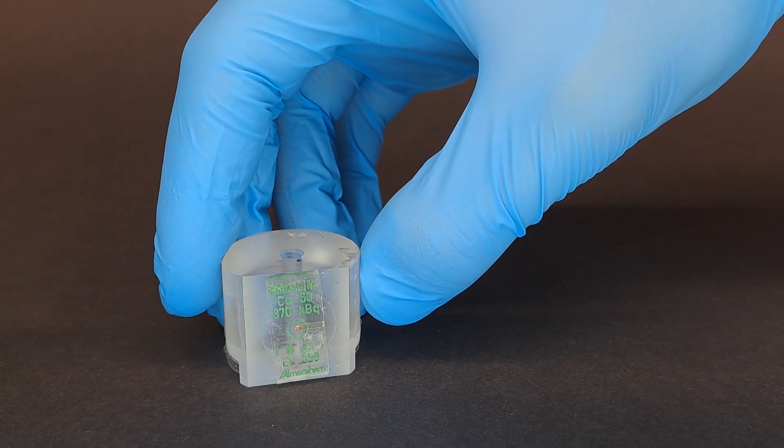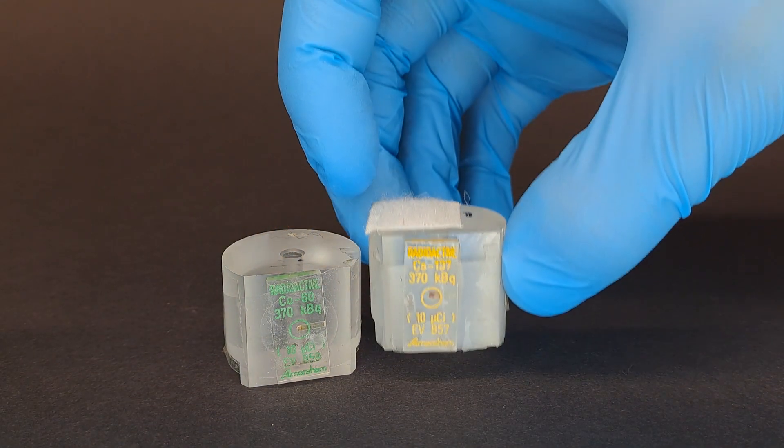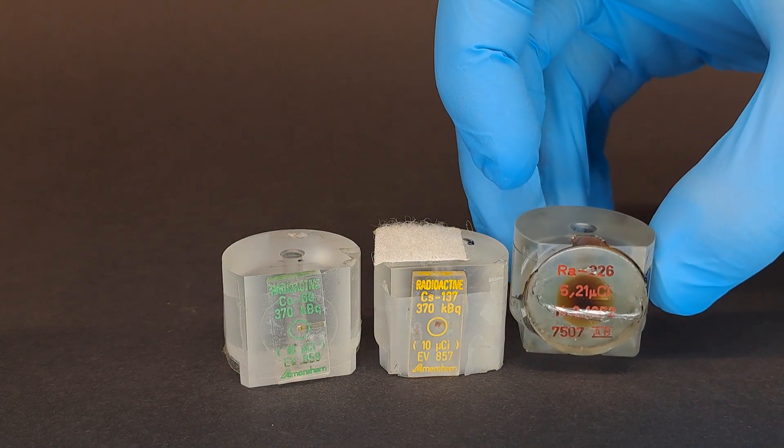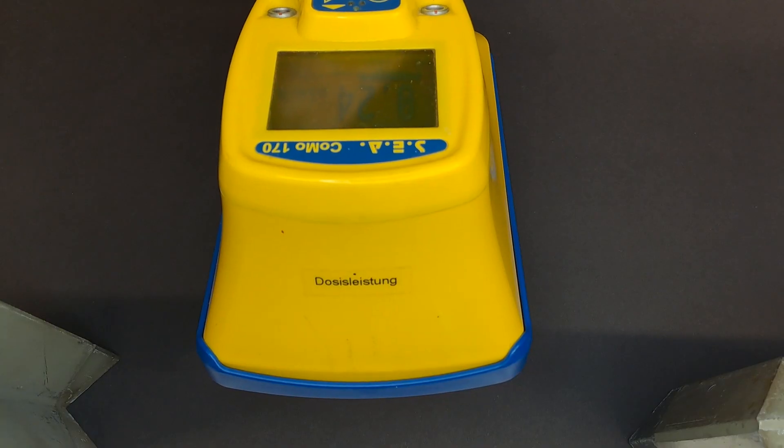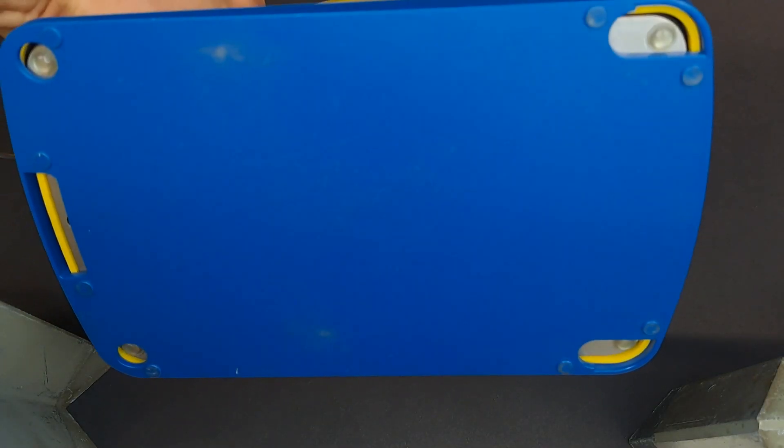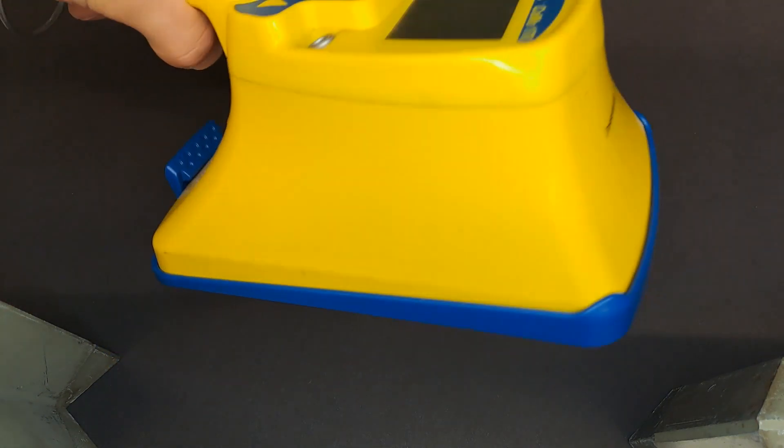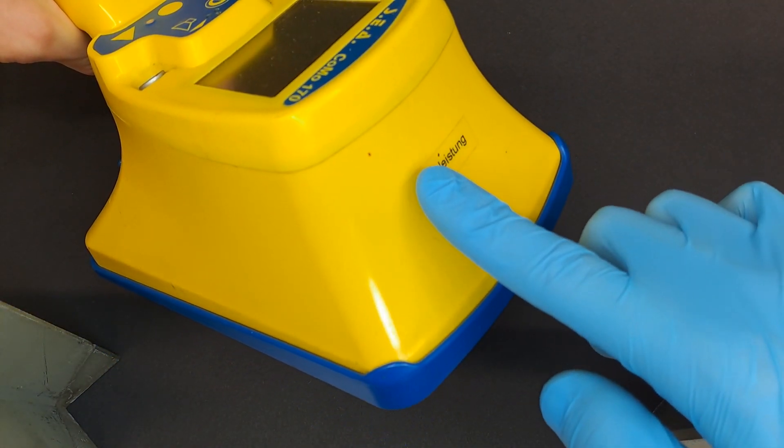Gamma calibration samples with Cobalt-60, Cesium-137, and Radium-226 are prepared. It's important to note that the professional device can measure both activity and dose rate, with the latter being measured at the front of the device.